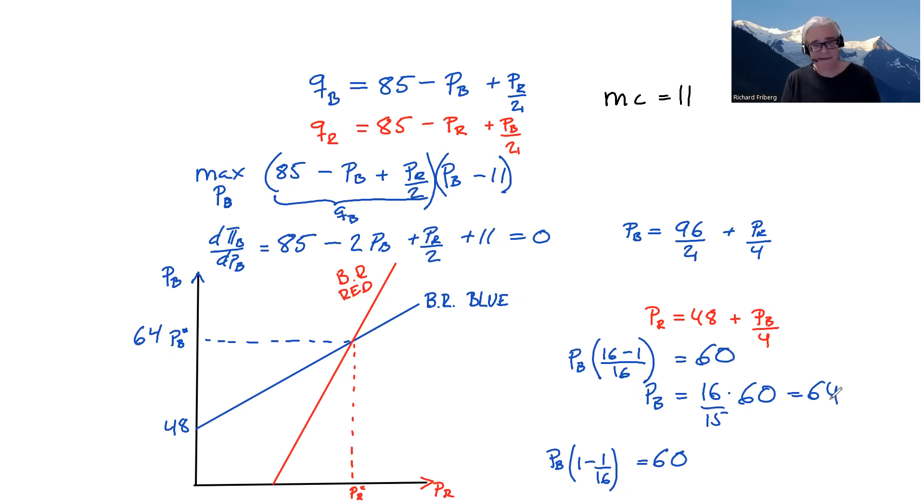And we could plug that 64 into red's best response function to get PR. Or we could, in this case, note by symmetry that they're going to be the same. So the price for red is also going to be 64. Will you still love me when I'm 64?